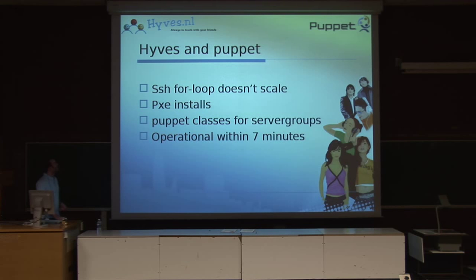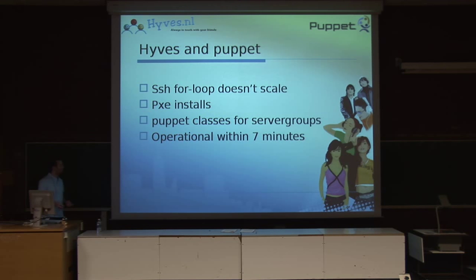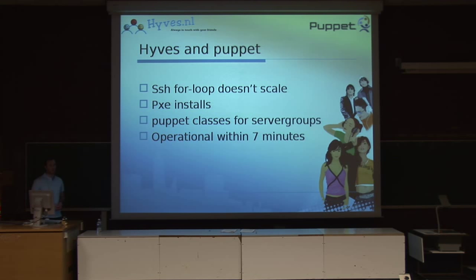I want to get to the point where we actually use Puppet at Hives. We started out with SSH for-loops, as most system engineers do. We found that doesn't scale, so we looked for something better and came across Puppet. Mainly what we do when we install a server: we rip open the box, press F12 to do a PXE install, it runs our quick-start the first time, sets the hostname, and then we put in the right node definition in Puppet and Puppet does the rest. That way we can be operational within seven minutes. For our main web service, our front-end service, if we rack the box and push F12, we're up and running within seven minutes — that's a pretty good time to get a server operational.